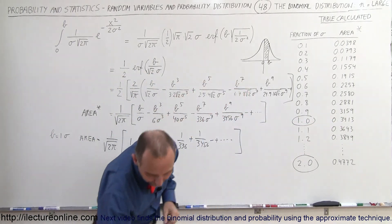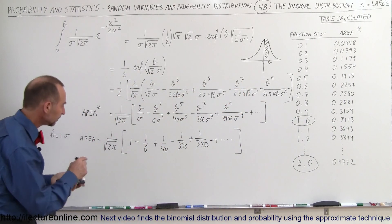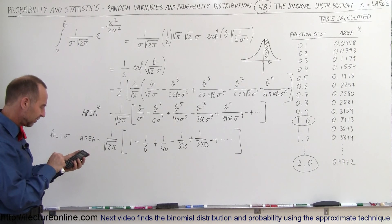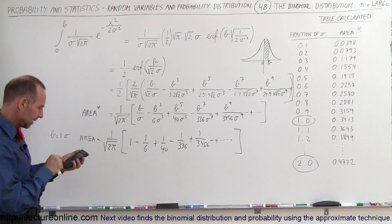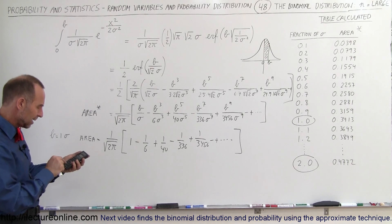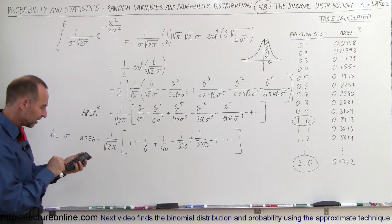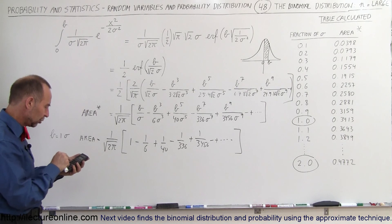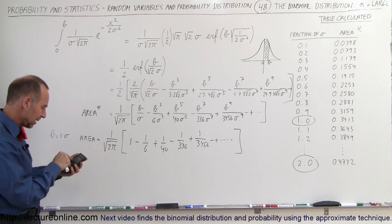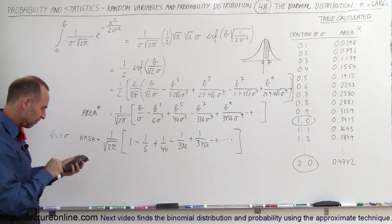So, let's try it. So, it's one minus one divided by six, plus one divided by 40, minus one divided by 336, and plus one divided by 3456, equals, we divide that by the square root of two, and we divide it by the square root of pi.